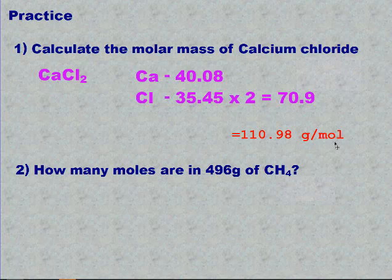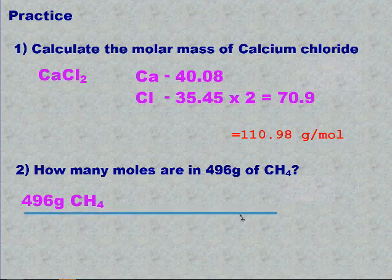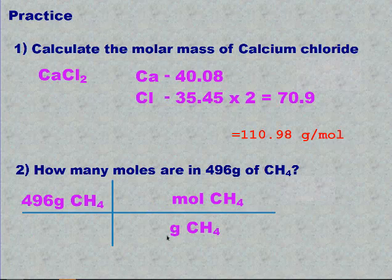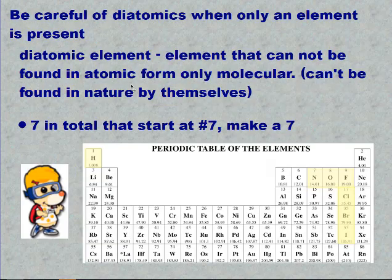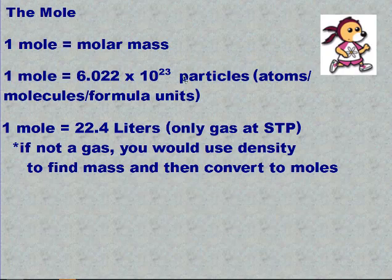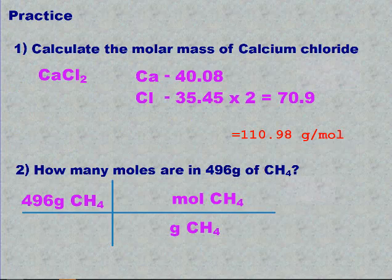For the next problem, they said how many moles do you have if you have 496 grams? So you start with the number given, which was 496 grams, and we're going to set up our dimensional analysis table. Just like when we were doing conversions, since we have grams on top, we're going to put grams on bottom, and we're looking for moles.